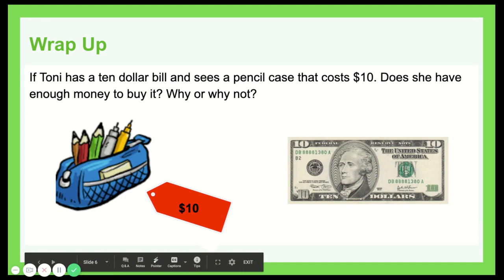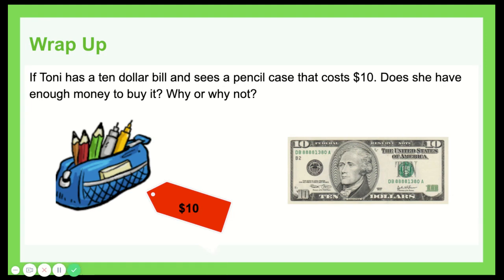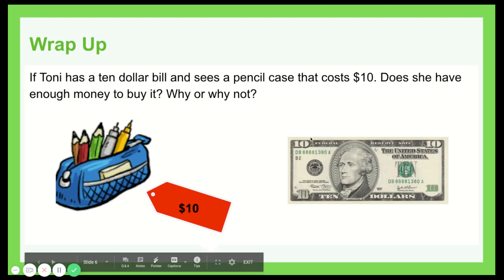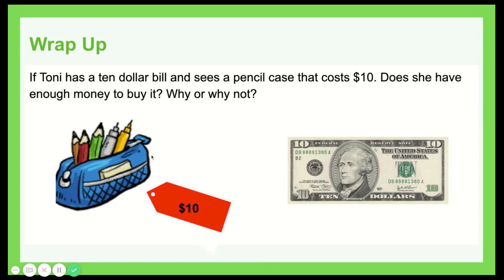One more challenge before we wrap up today. Let's say Tony has a $10 bill and sees a pencil case that costs exactly $10. Do you think she has enough money to buy it? Why or why not? If you said that Tony does not have enough money to buy the pencil case because she hasn't accounted for sales tax, then you would be correct. Tony would have to have a few more coins to pay for the sales tax — depending on the percentage rate in her area — in order to buy the pencil case.